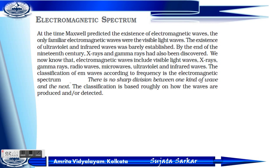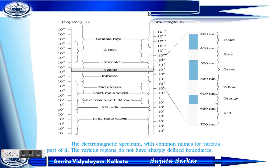By the 19th century, X-rays and gamma rays had also been discovered. The electromagnetic spectrum includes visible light waves, X-rays, gamma rays, radio waves, microwaves, ultraviolet waves, and infrared waves. The spectrum chart shows common names, frequencies, and wavelengths. The visible light portion includes violet, blue, green, yellow, orange, and red.